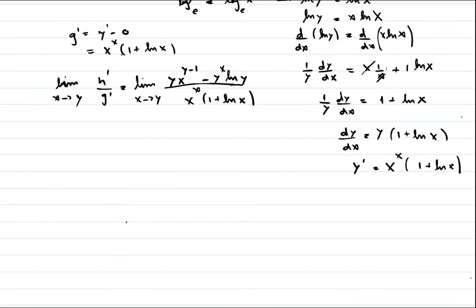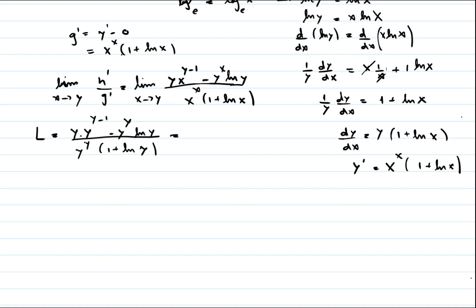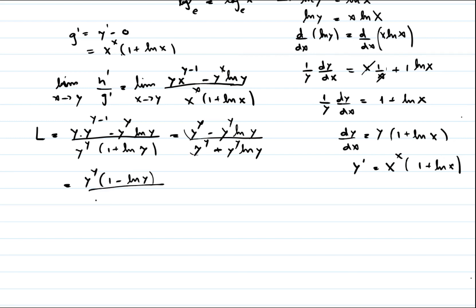Now we test whether substituting x equals y still gives an indeterminate form. Replacing x with y: the numerator becomes y·y^(y−1) minus y^y·ln y, which simplifies to y^y minus y^y·ln y, factoring to y^y(1 minus ln y). The denominator becomes y^y·(1 plus natural log of y). The common factor y^y cancels, and our final answer simplifies to: (1 minus natural log of y) divided by (1 plus natural log of y).